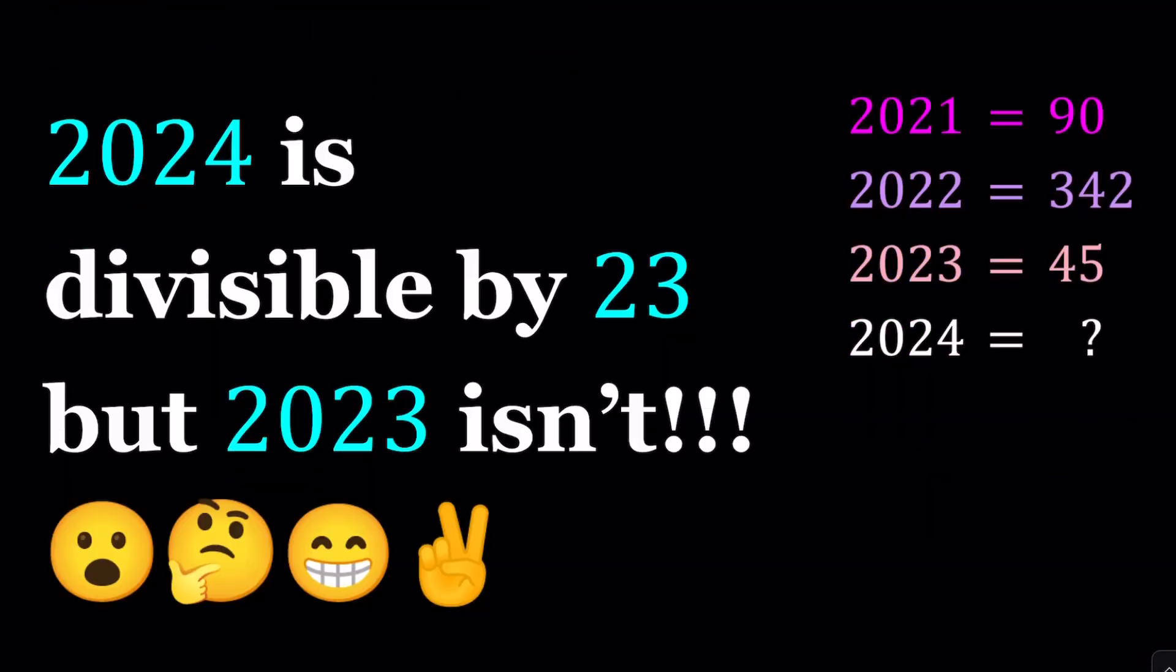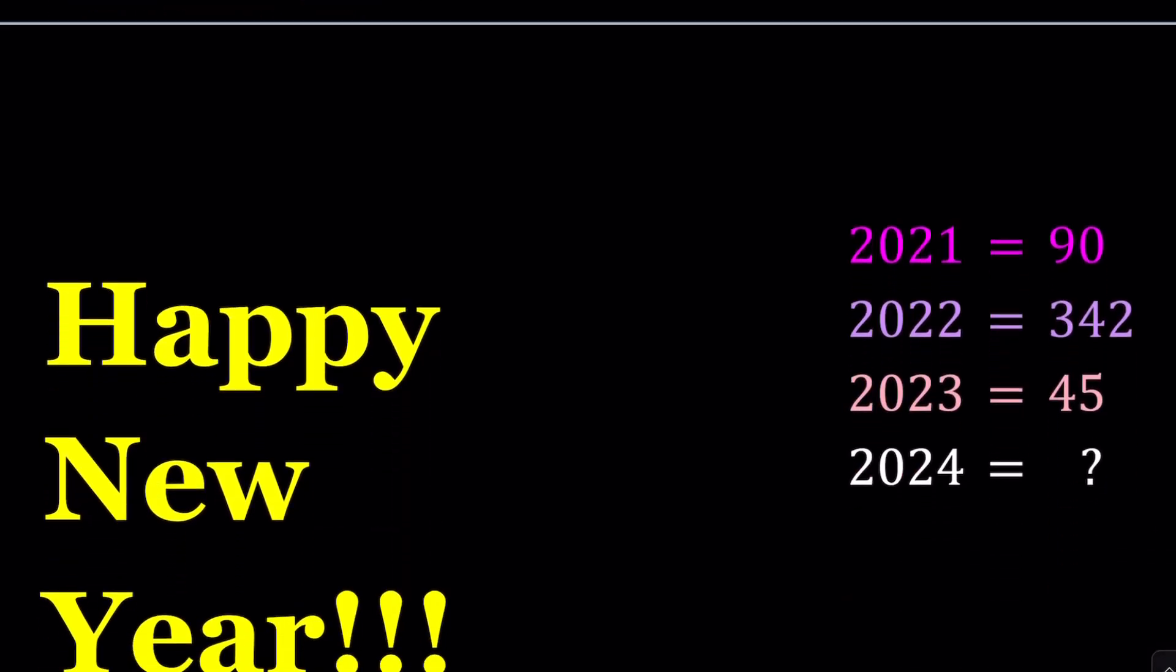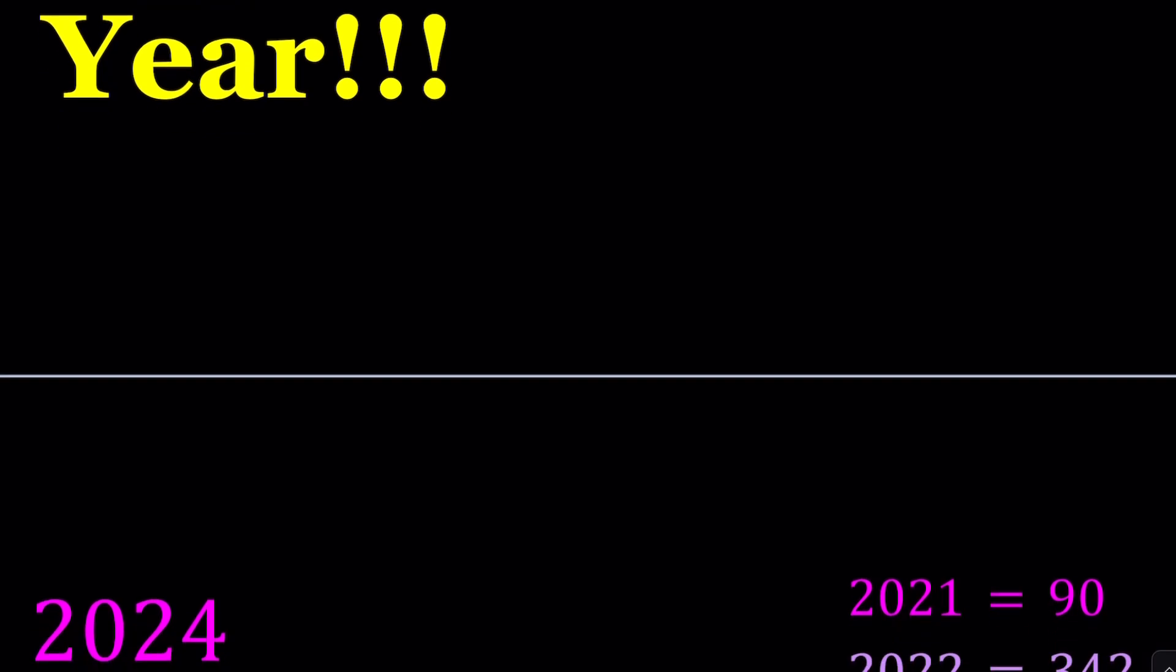All right, so the first fact is going to be 2024 is divisible by 23, but 2023 isn't. Isn't that interesting? I kind of find it interesting that this is the case. Anyways, let's go ahead and take a look at some facts before we start solving this puzzle.